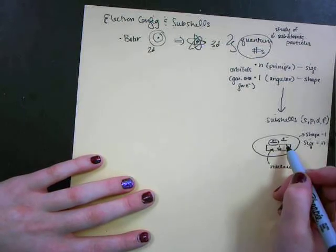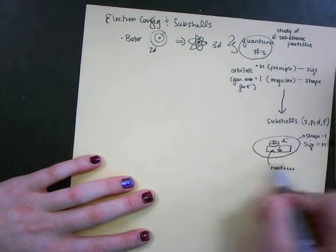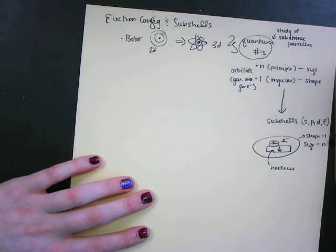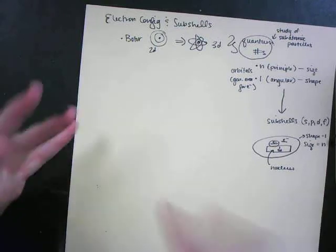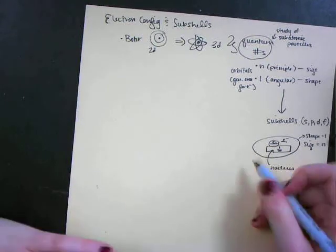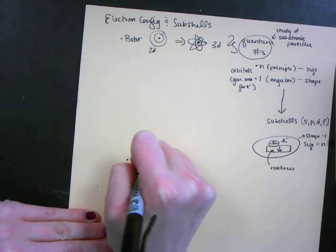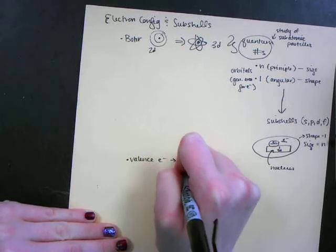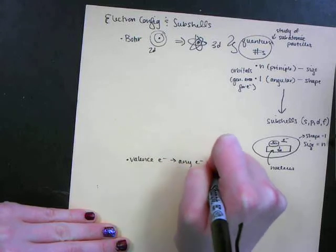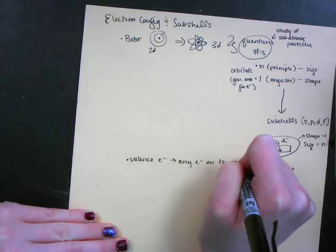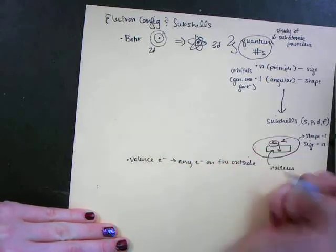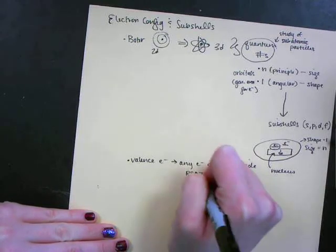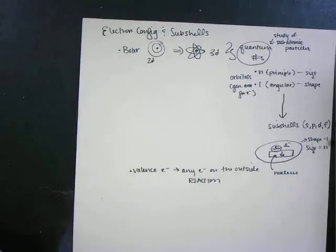This sub shell is where your electrons are very happy to be sitting. Subshells are like the seats where the electrons actually are in this whole orbital, in this whole space. We want to see what a valence electron is. Valence is any electron on the outside.